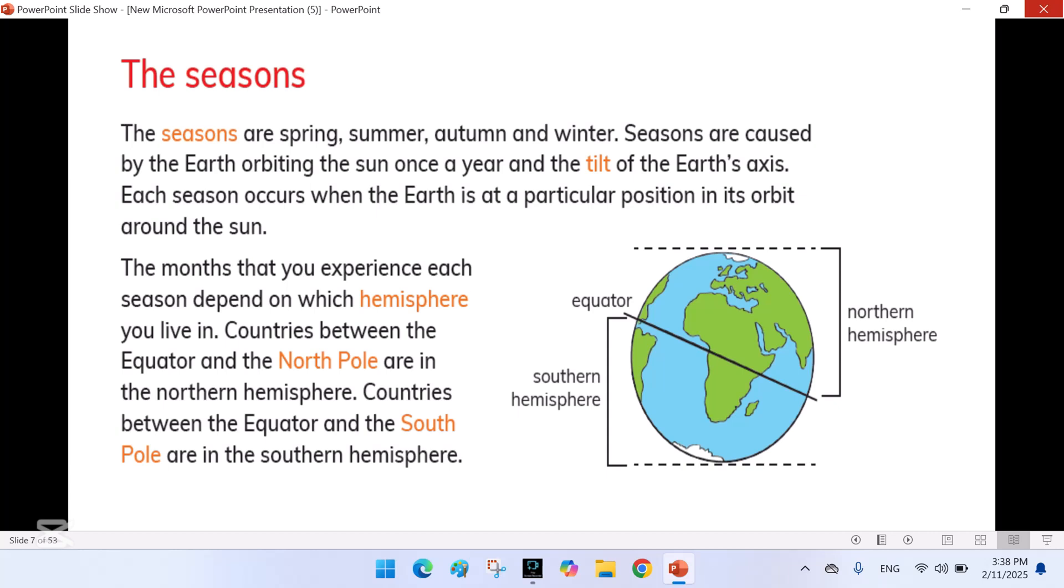The months that you experience each season depends on which hemisphere you live in. Countries between the equator and the north pole are in the northern hemisphere. Countries between the equator and the south pole are in the southern hemisphere.